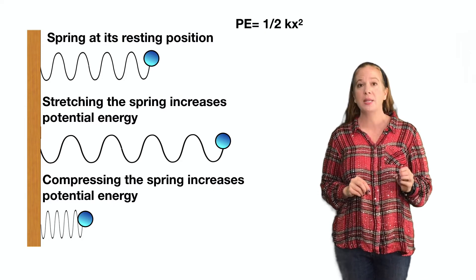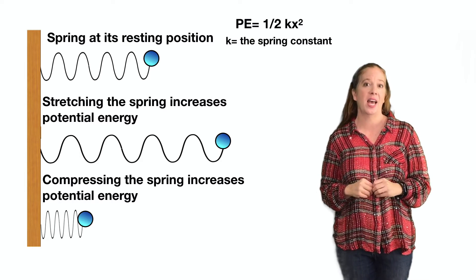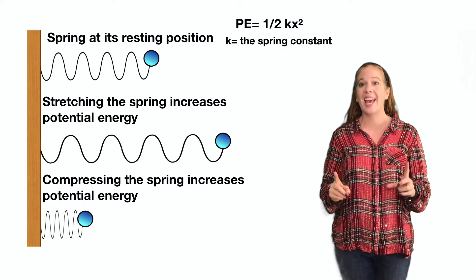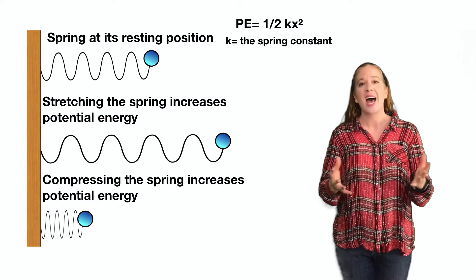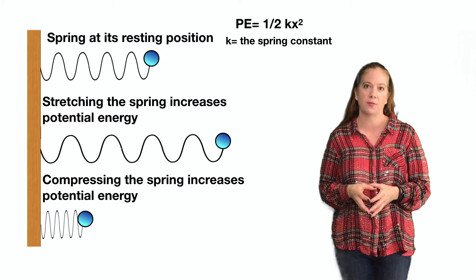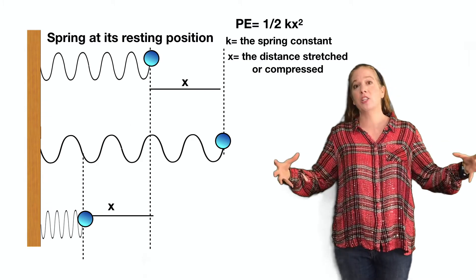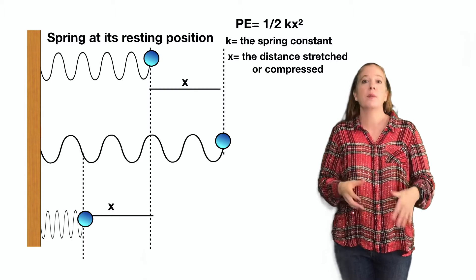To find the potential energy of the spring, we use the formula: potential energy equals 1 half k x squared, where k is the spring constant, and each spring has its own spring constant, which is determined by how stiff it is. x is the distance that is stretched or compressed from its resting position.